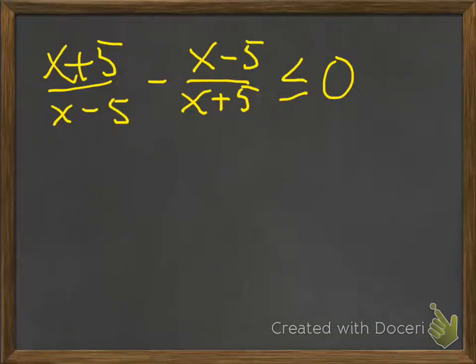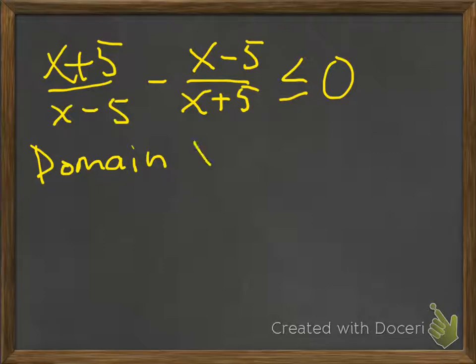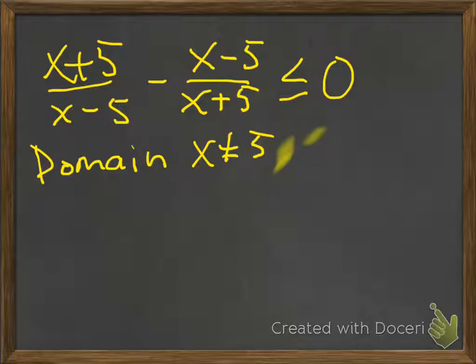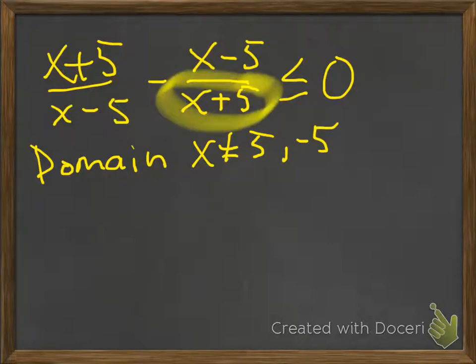Step 1: we want to find the domain restrictions. You can never divide by zero. The domain says that x cannot equal 5, because it would make this denominator zero, or minus 5, because that would make this denominator zero. And those are the bad zeros — they'll come up later.